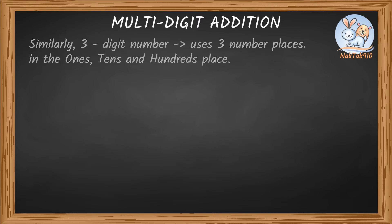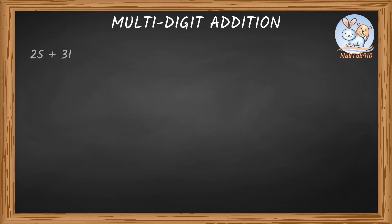Say, I need to add 25 plus 31. Step 1: Stack the given numbers. Here is the important part. Be sure to line up the number places. Five is in the ones place of 25, and one is in the ones place of 31. Stack the two-digit numbers in ones place and tens place.